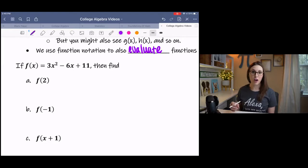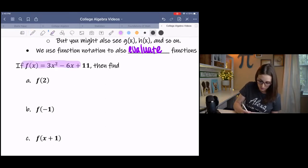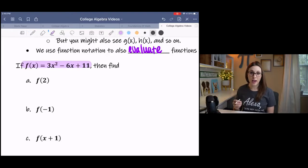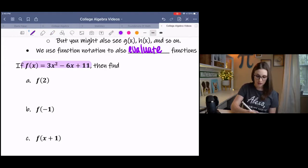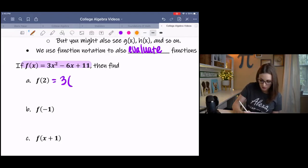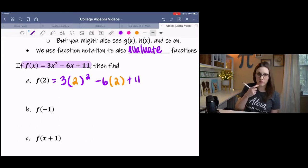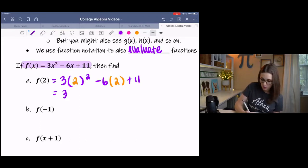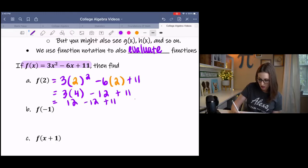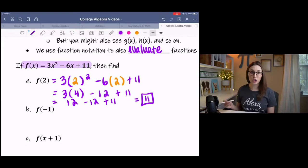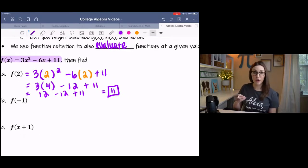In part a, it says f of 2, which means that we want to take the function f and evaluate it at x equals 2. In place of x, we're going to use 2 instead. We're substituting. So we have 3 times 2 squared minus 6 times 2 plus 11. At this point, you can either just type that in your calculator or you will use order of operations where we square the 2, multiply those, multiply those, and then add. So f of 2 is 11.